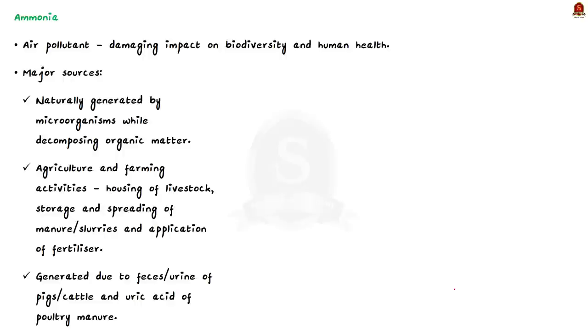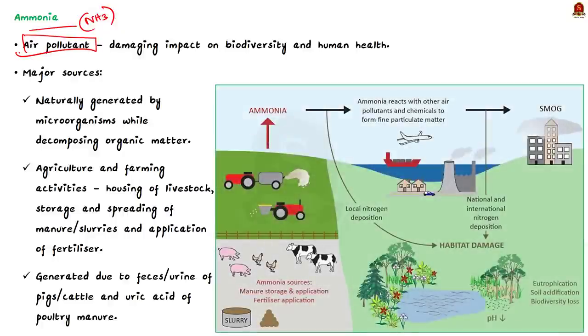So now let us come to the reactive nitrogens mentioned in the question. Let us take up the ammonia one first. It is denoted as NH3. Ammonia is an air pollutant. It is known to have damaging impact on biodiversity, including sensitive habitats and ecosystem resilience. It also impacts human health. But our focus is on the sources.